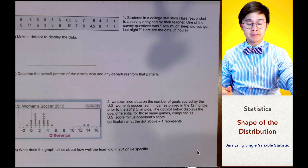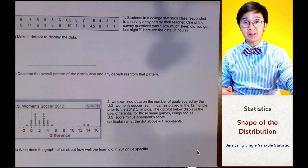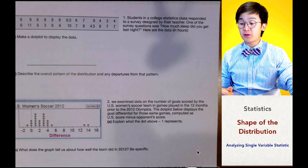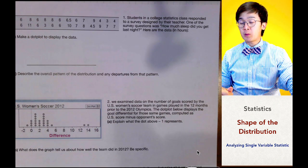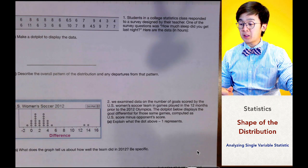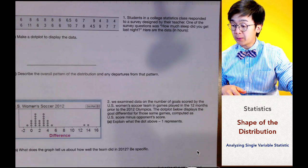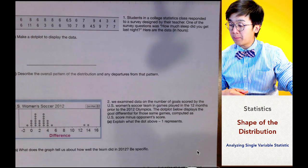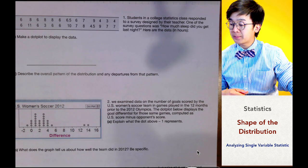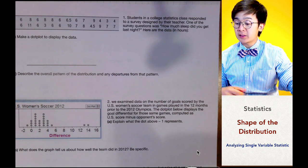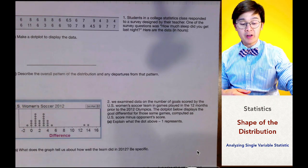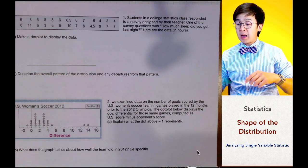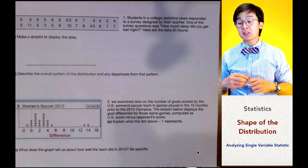Today we're going to be working on analysis of a univariate data set, or single variable statistics. For the first problem, we're working on a survey from statistics students. The responses are here in our table, and the first thing we're going to be working on is the amount of sleep students get at night — specifically, creating a dot plot based on this data set.